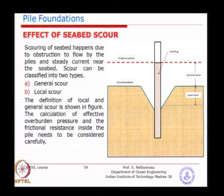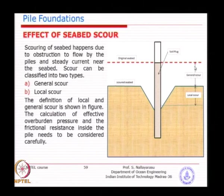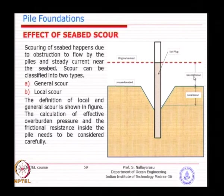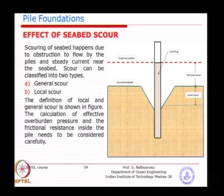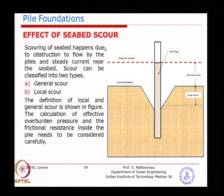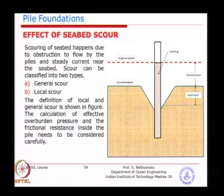Natural scour can be classified as a general overall scour if the flow velocity is so uniform that it carries a lot of particles away. Whereas local scour is typically associated with circulation and eddy formation very close to the structure itself.